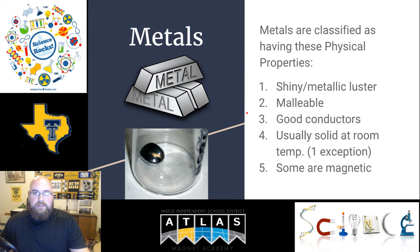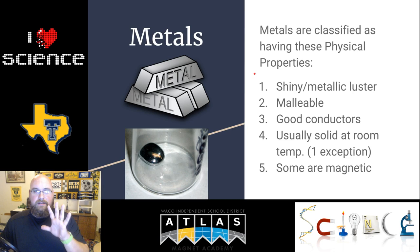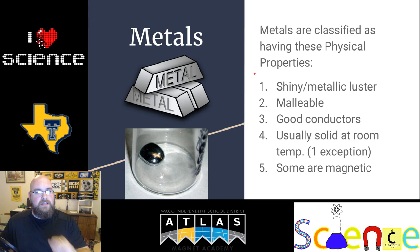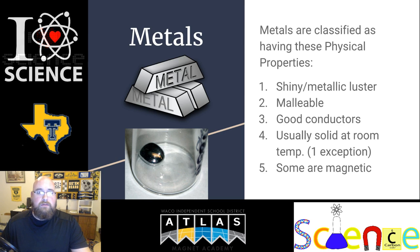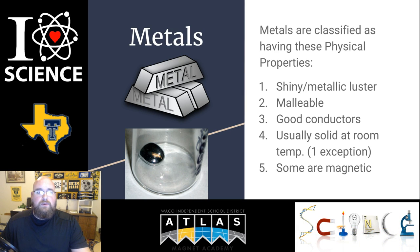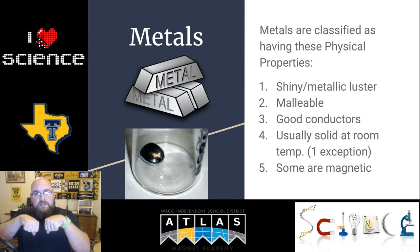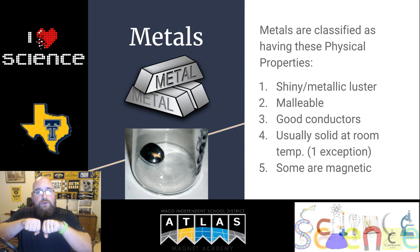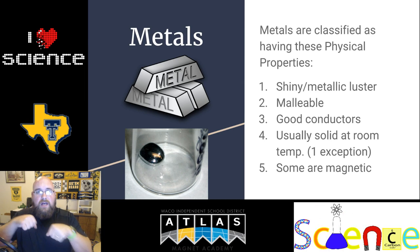Now let's talk about what it takes to be in each category. The first is metals. Metals are classified by having these five properties, with a few exceptions. First, they have a shiny or metallic luster — which makes sense, metal and metallic. They are malleable, meaning they can be bent without breaking. Don't be confused if you can bend a paper clip multiple times and then break it — it's still considered malleable.